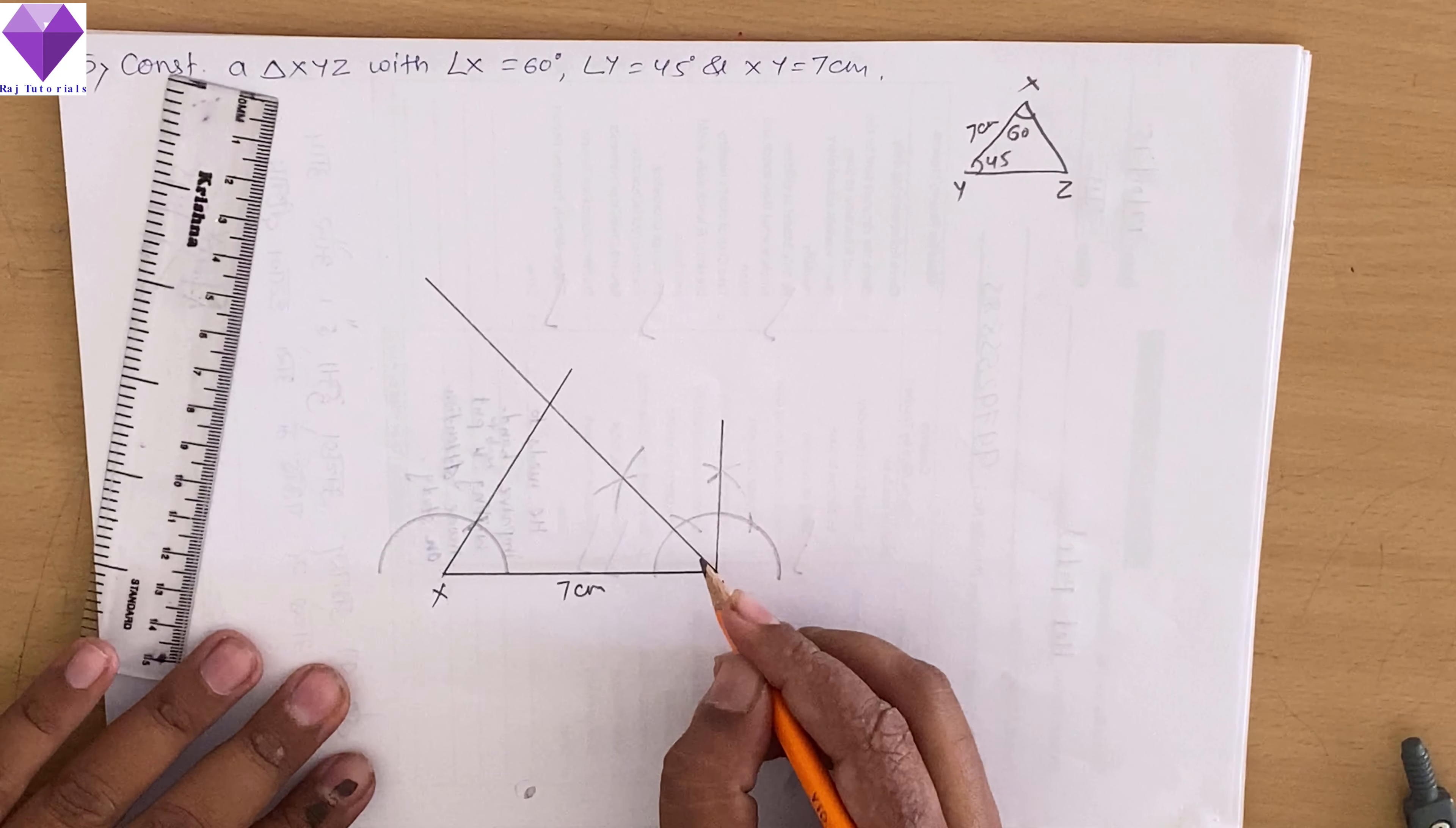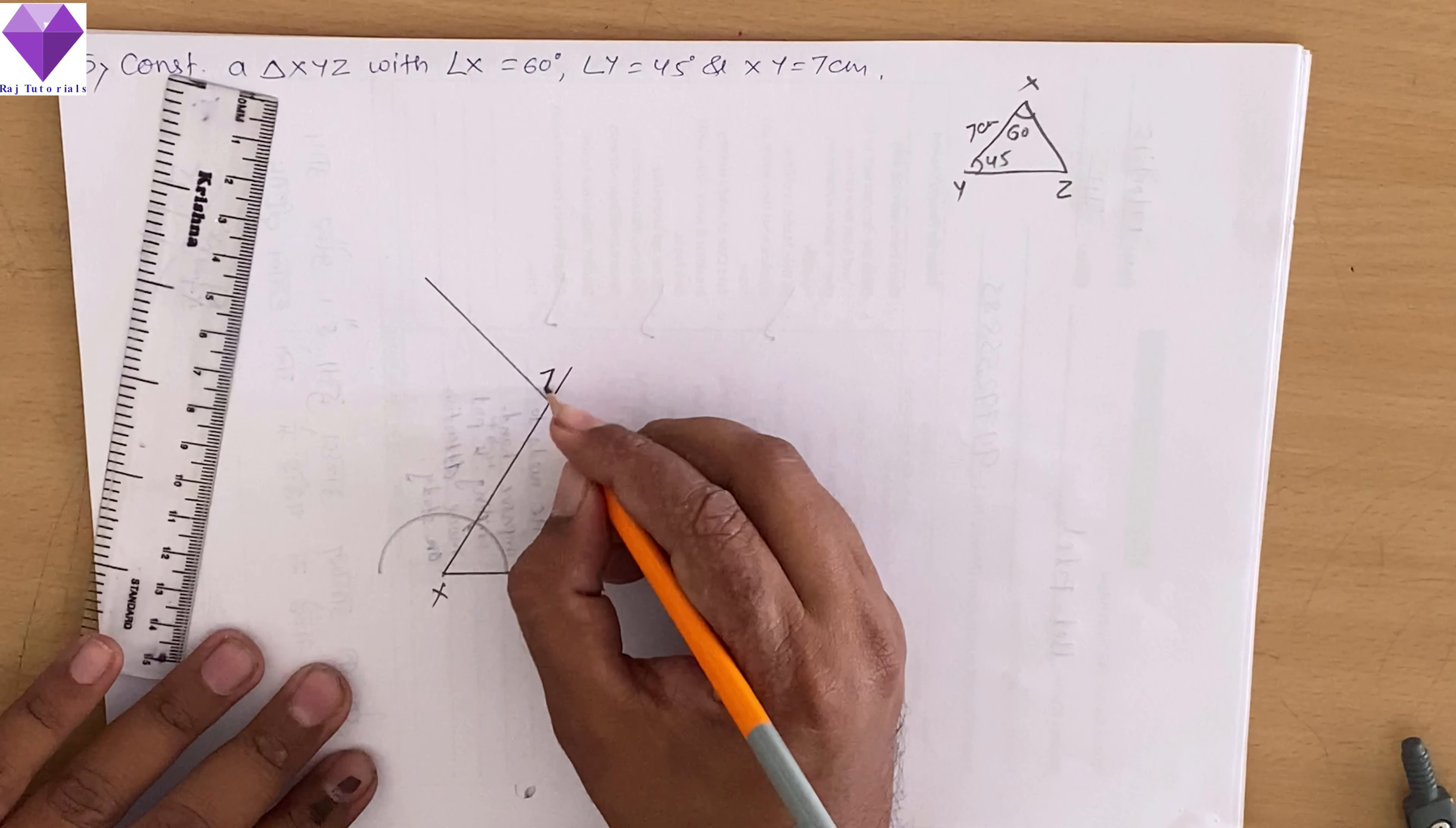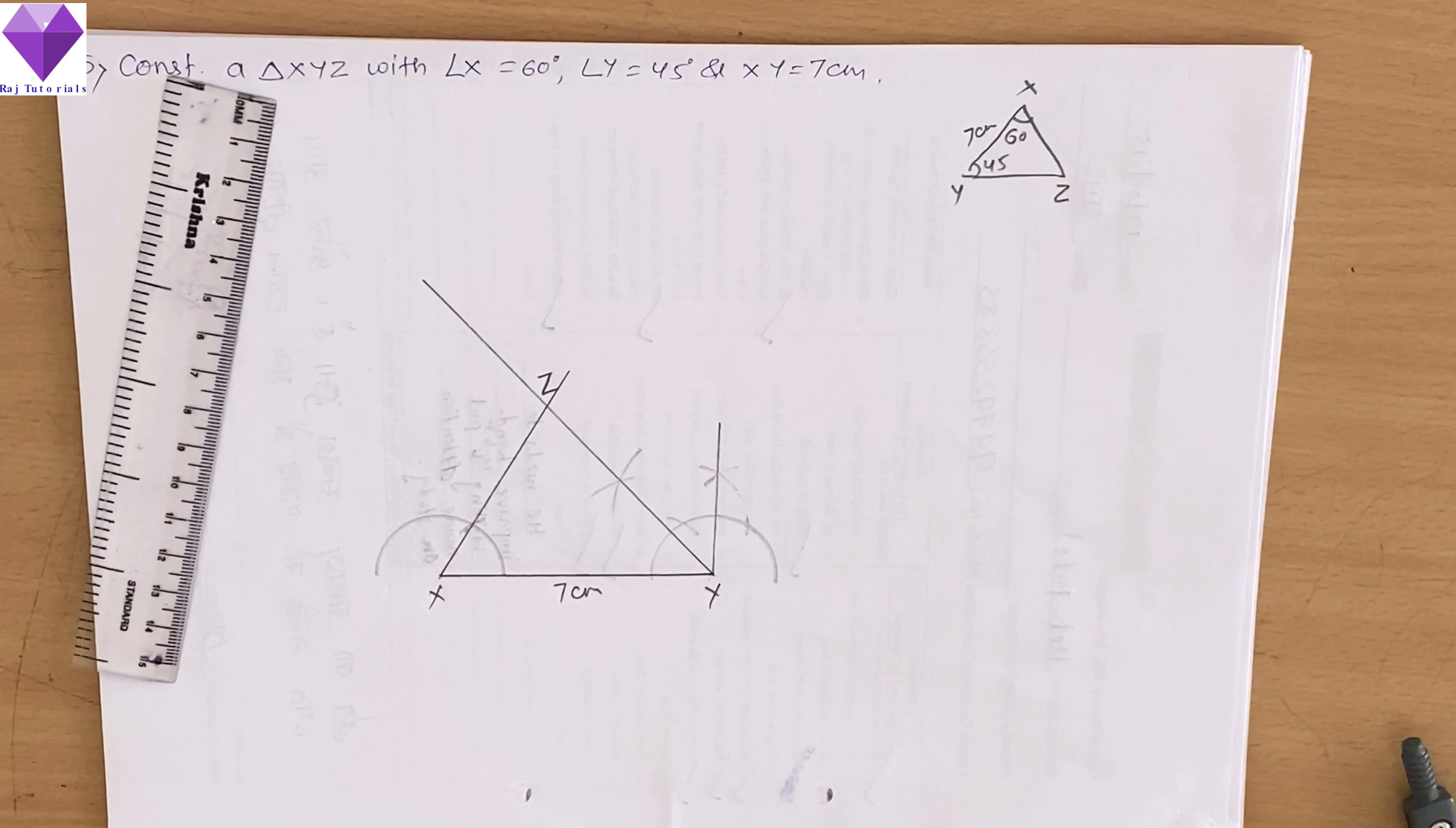Angle X is 60 degree. Angle Y is 45 degree. So my triangle is ready. Thank you.